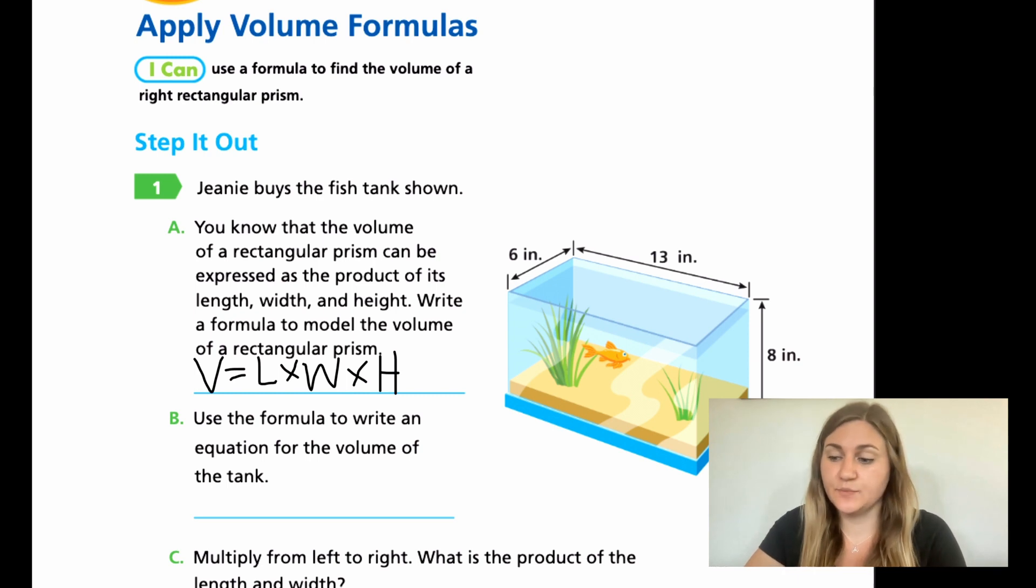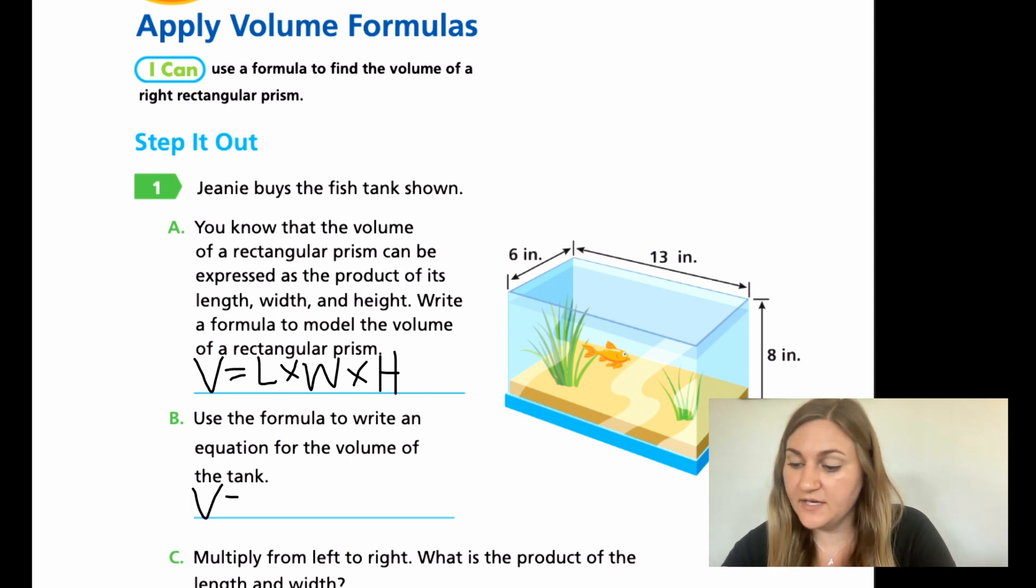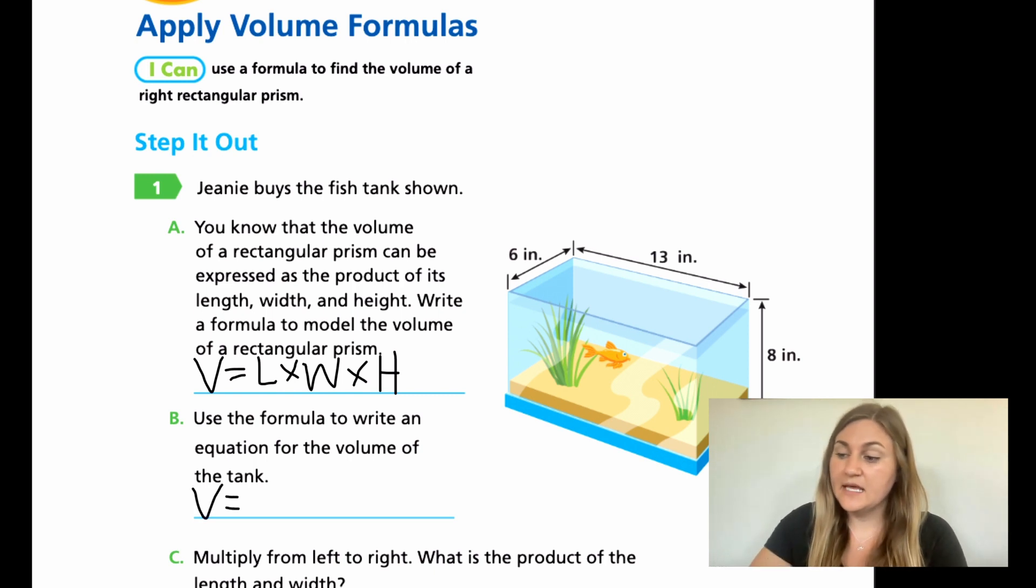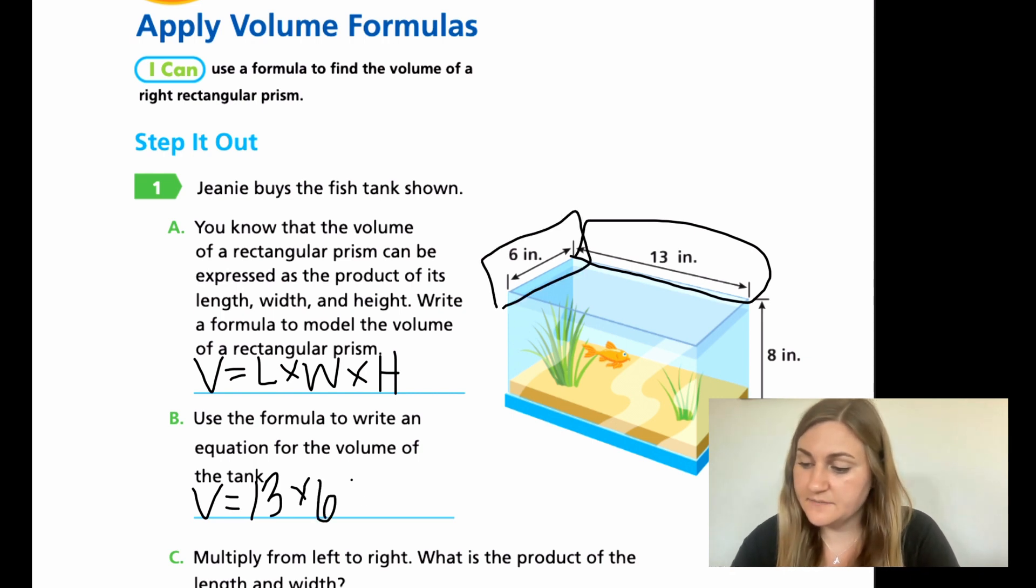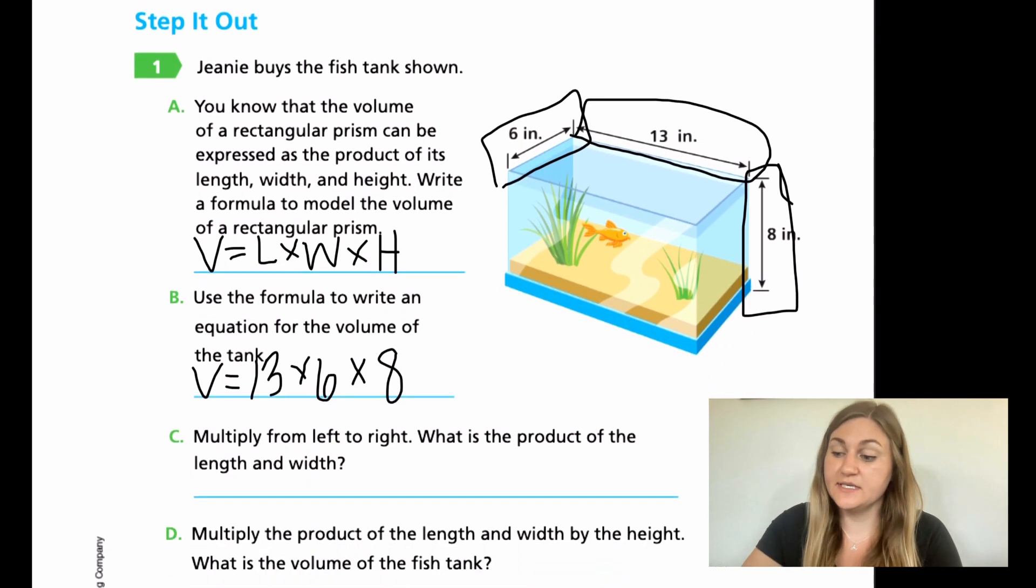Now in B, we're going to apply it to this problem. Use the formula to write an equation for the volume of the tank. Now we're talking specifically for this problem. So we're still looking for the volume here, so we're going to keep our V. The length on how long it is here is 13. The width, how wide it is here, is 6. And how tall it is, that's the height, is 8.